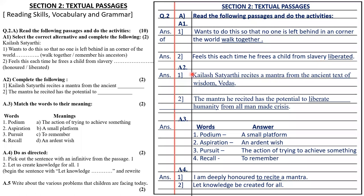Then A2. First, complete the following: Kailash Satyarthi recites a mantra from the ancient text of wisdom, the Vedas. Second, the mantra he recites has a potential to liberate humanity from all man-made crisis.